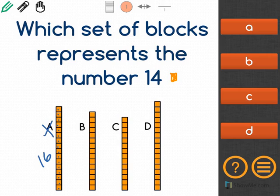Now I'm going to count B. 1, 2, 3, 4, 5, 6, 7, 8, 9, 10, 11, 12, 13, 14, 15. That's also wrong.